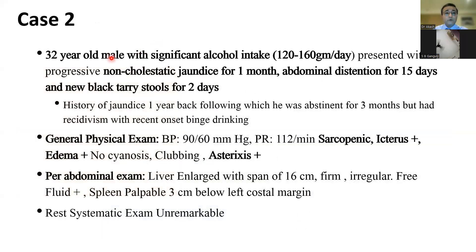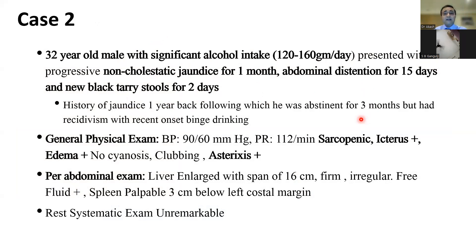The second case is a 32-year-old male with significant alcohol intake amounting to 120 to 160 grams per day, presenting with non-cholestatic jaundice for one month, followed by abdominal distension for 15 days, and new-onset black tarry stools for two days. He had a history of jaundice one year back, following which he was abstinent from alcohol for three months but had recidivism with recent binge drinking. He is hypotensive, tachycardic, nutritionally poor, icteric, with edema, and grade 2 hepatic encephalopathy.